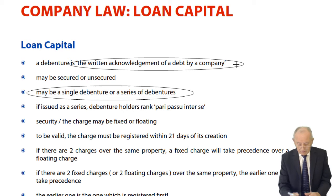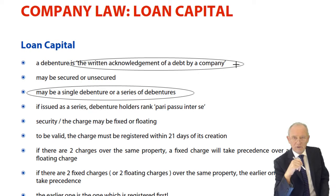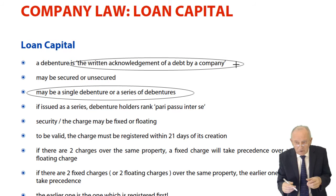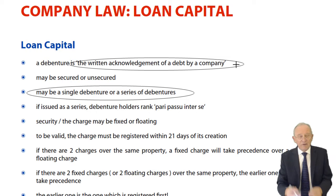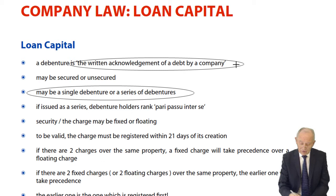A debenture may be secured or unsecured, a single debenture from the bank, or a series inviting the public to send in multiples of £100. In the series situation, we need to keep a record of who has lent us money — a register of debentures, a register of mortgages and charges, and a register of debenture holders. If it's a series, the debenture holders rank pari passu — that's Latin meaning they rank equally amongst themselves.